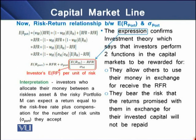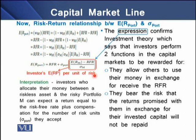After these two workings, when we establish the risk-return relationship between portfolio riskiness and portfolio expected return, we conclude that the expected return on the portfolio equals the risk-free rate plus the risk premium per unit of risk. This means investors who allocate money between a riskless asset and a risky portfolio M can expect two things: first, a return equal to the risk-free rate, and second, a compensation for the number of risk units taken.